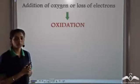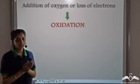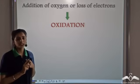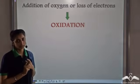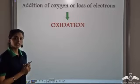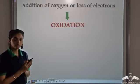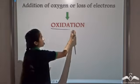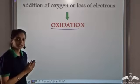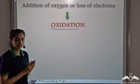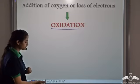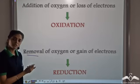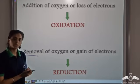So how do we compare oxidation and reduction with the addition and removal of oxygen and the gain and loss of electrons? Whenever there is addition of oxygen or a loss of electrons, that reaction is known as an oxidation reaction. Similarly, the opposite case — whenever there is a removal of oxygen or gain of electrons.